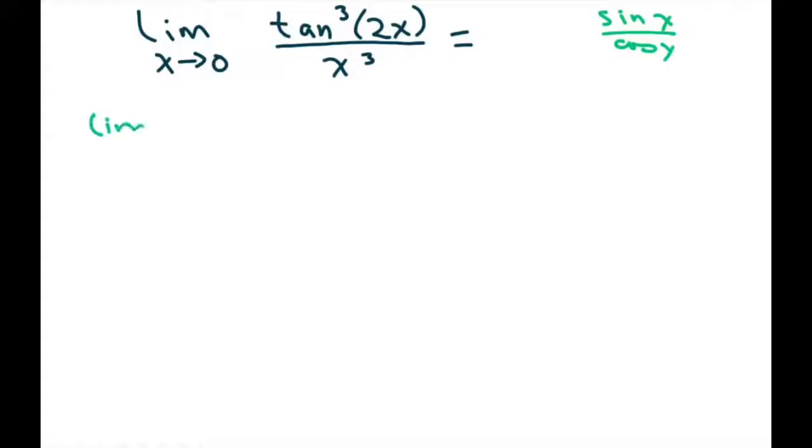So the limit as x approaches 0, I'm just going to substitute this as sine cubed 2x divided by cosine cubed of 2x. And we still have this x cubed in the front here. So basically this portion here was just this at the top. And then we still have our x cubed in front.